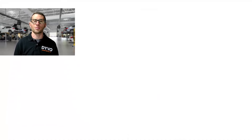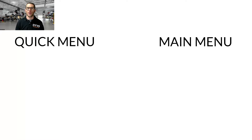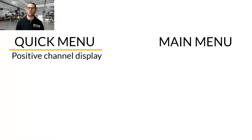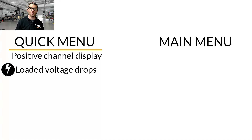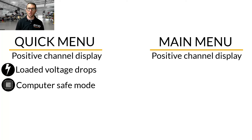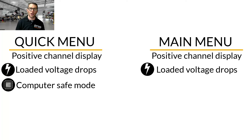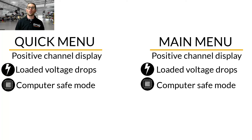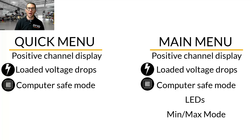There are two menus: a quick menu and a main menu. In the quick menu, you can change the way the positive channel displays voltage, and you can cycle between loaded voltage drops or computer safe mode. In the main menu, you can also change the way the positive channel displays voltage, cycle between loaded voltage drops or computer safe mode, turn the LEDs on or off, turn on min-max mode, and save custom settings.